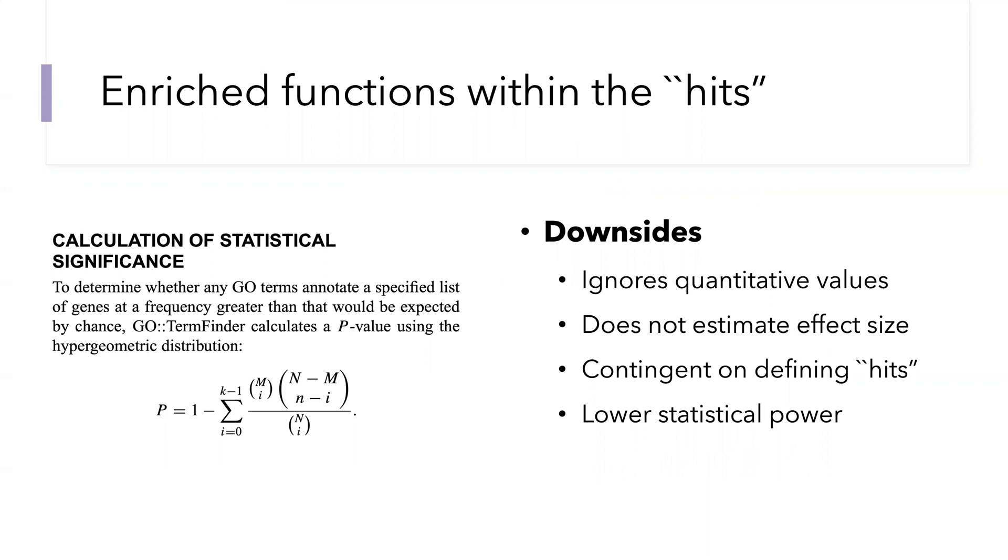This approach is nicely exemplified with a tool known as GO term finder that was developed originally for analyzing genomics data from DNA microarrays at the beginning of the 2000s. With this approach, one can simply determine using the hypergeometric distribution the probability of seeing the observed number of proteins from a particular set within the hits by chance alone. For example, let's say you observe 10 ribosomal proteins within the set of proteins identified to be significantly upregulated. Given the total number of hits and using the hypergeometric distribution, you can compute the p-value for how significant that is.